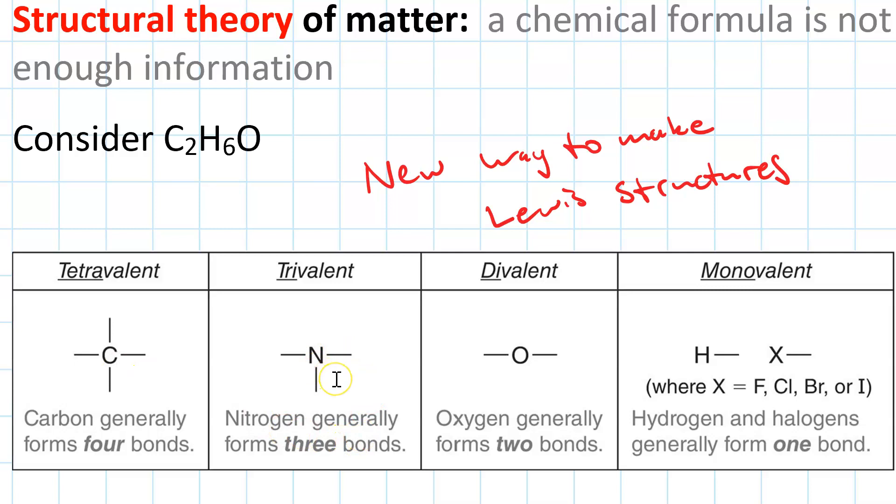Nitrogen is trivalent, meaning it likes to form three bonds: three single bonds, a double and a single, or a triple bond. Nitrogen will also have a lone pair.